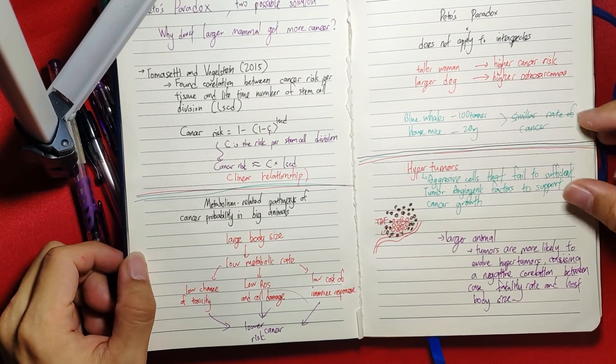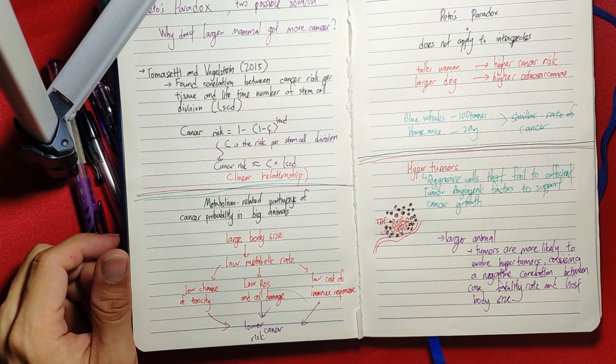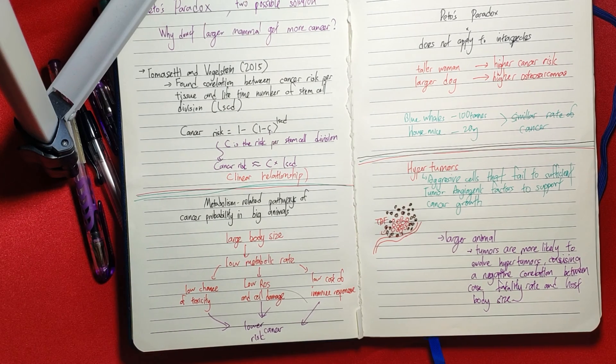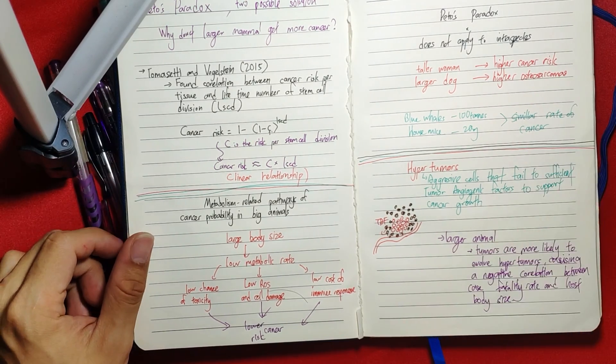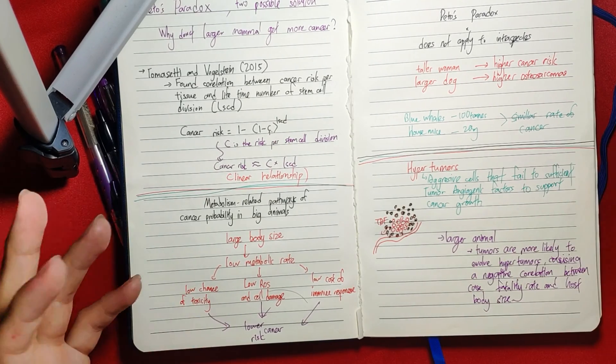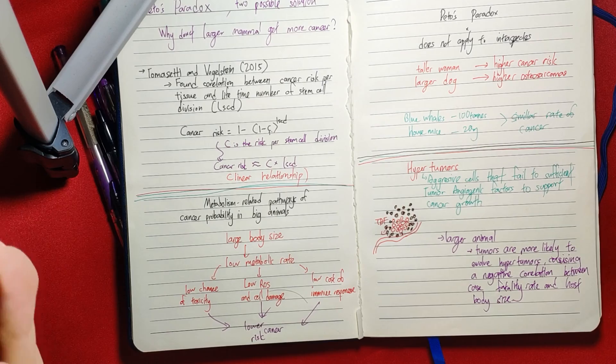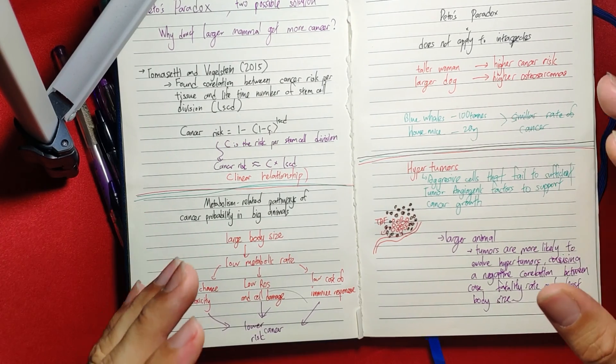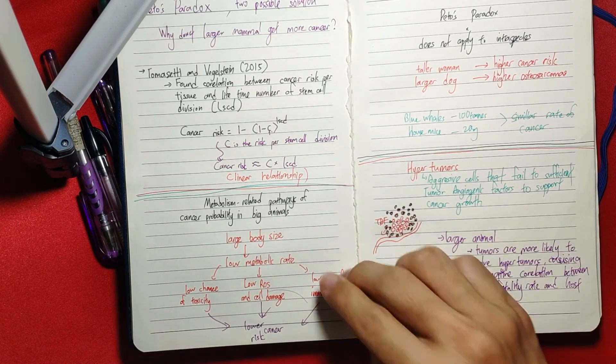There are certain animals that are not that big and not that small that actually have a really high rate of cancer, such as the Tasmanian devil which has almost 80 or 90 percent chance of developing cancer. The cancer actually comes from infectious disease. The detailed description will be linked in one of the articles below.